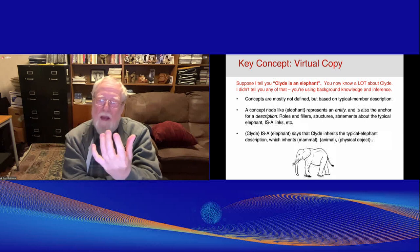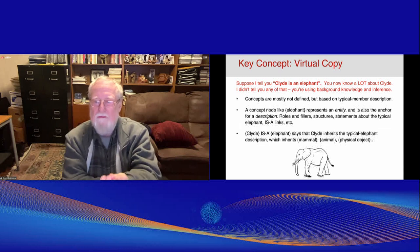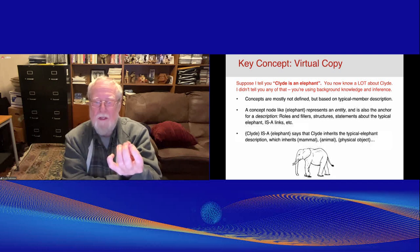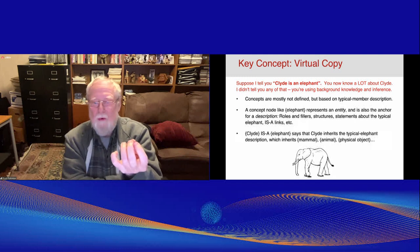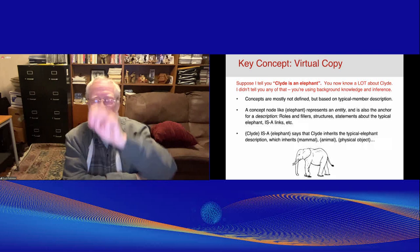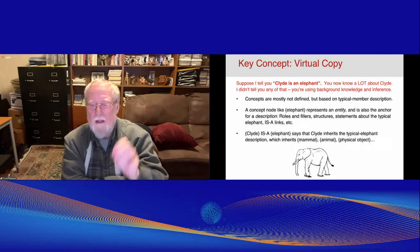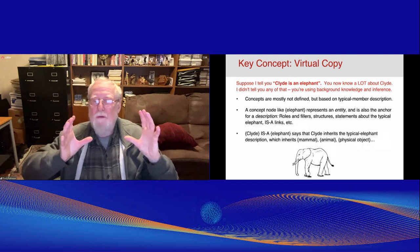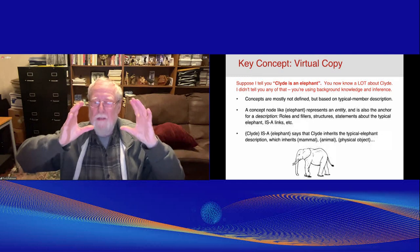So concepts are mostly not defined, but each concept, like elephant, is represented as a description of the typical member of the class. So it will have roles and fillers, like color is gray. It will have structures, like the parts of the elephant, how they connect. It will have statements about the typical elephant, that they like peanuts. It will have Isa links to other classes, like mammal and herbivore. And it inherits knowledge from all those superior classes. So when I say Clyde is an elephant, you're getting the composite description of all the things that are above Clyde in the Isa hierarchy. That's what we want to happen.